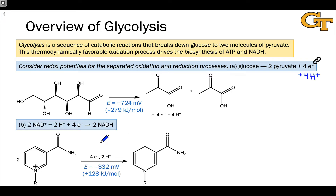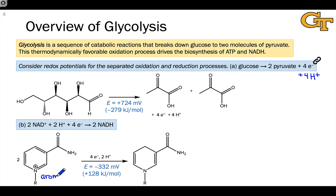The second process to consider — the second sub-process of glycolysis — is the reduction of NAD+ to NADH. Two equivalents of NAD+ react with two H+ and four electrons to give two equivalents of NADH. This reaction is thermodynamically disfavored, and the fundamental organic chemistry reason is that it destroys aromaticity — we go from an aromatic pyridinium ion to a non-aromatic product.